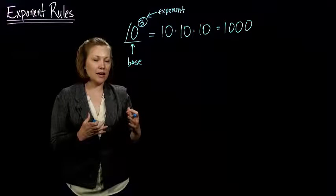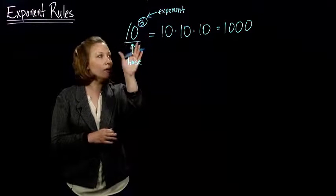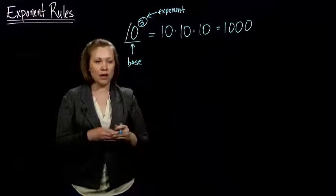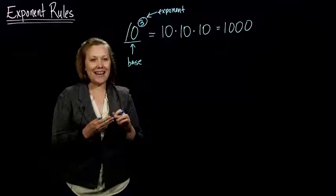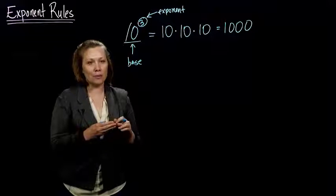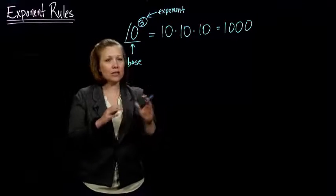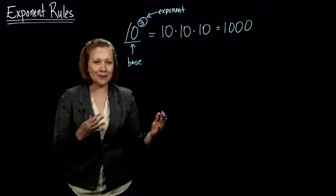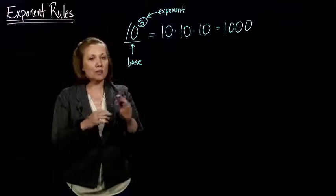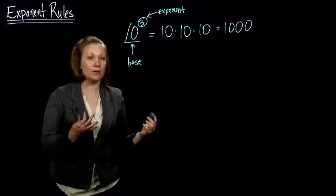And exponents are actually kind of cool, because they're multiplication, and multiplication has properties of associativity, commutativity, and the distributive property also applies. But mostly because multiplication is associative and commutative, we can use these properties to come up with what we call exponent rules.